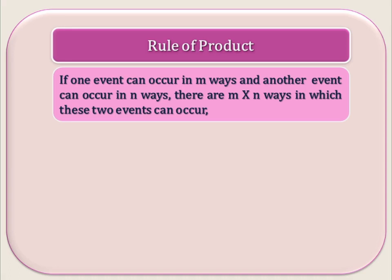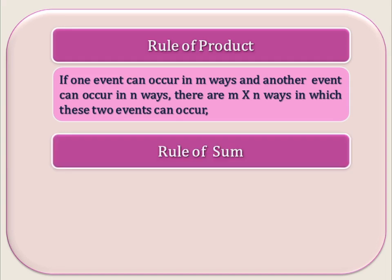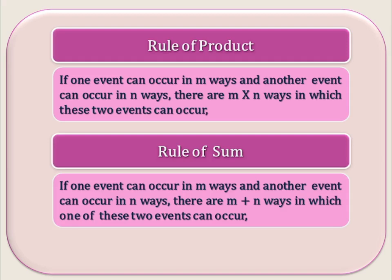The second rule is the rule of sum. If one event can occur in m ways and another event can occur in n ways, then there are m + n ways in which one of these two events can occur. The difference is: when both events occur together, use the rule of product (multiply). When either one event or the other occurs, use the rule of sum (add).